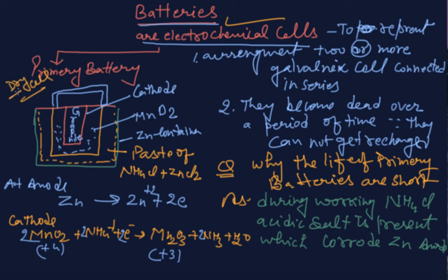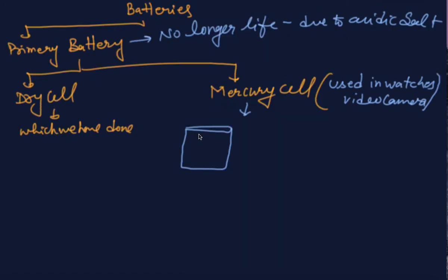And whenever primary battery, this is actually called dry cell primary battery is first part, it is dry cell. Second I am going to share you right now. Yes guys, now that is our two types primary battery: dry cell which I explained you, no longer life due to acidic salt; mercury cell.